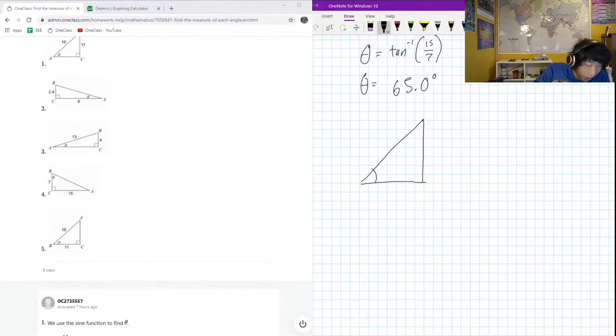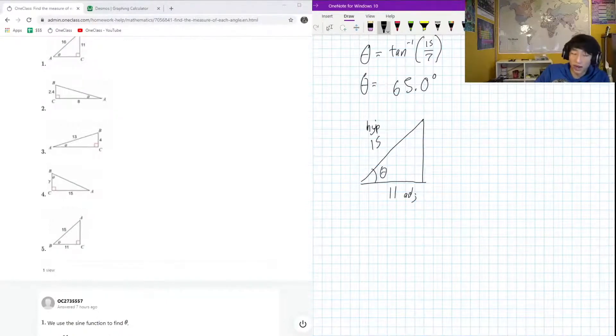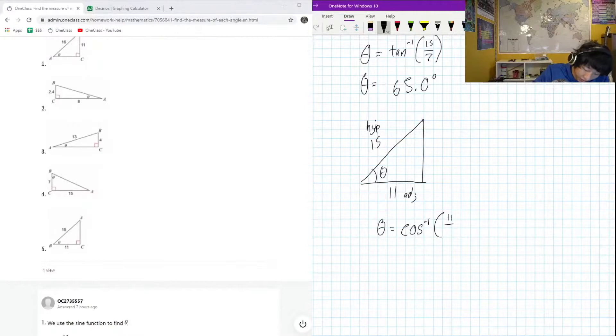And here we have an adjacent length of 11. So adjacent and hypotenuse are related through cosine, so we will need to do our inverse cos to get the angle. So it's going to be adjacent 11 over 15.